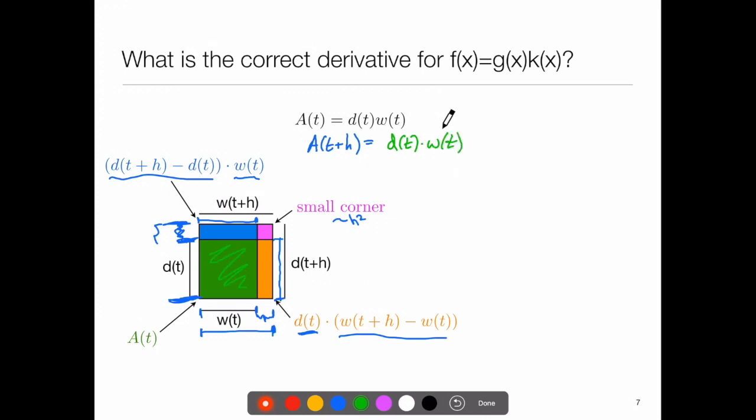Then we're going to add to that the blue area. That's the whole rectangle, and now I'm going to break it up into parts using the color. The blue area has an area of d of t plus h minus d of t, all multiplied by w of t, and the orange area will have an area given by d of t times w of t plus h minus w of t.